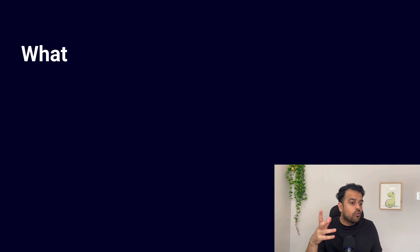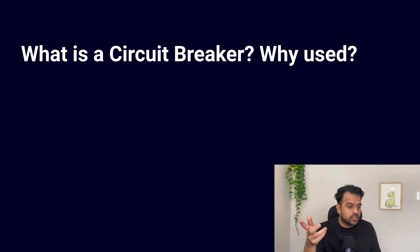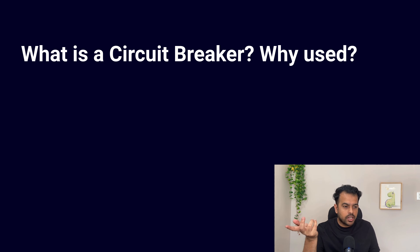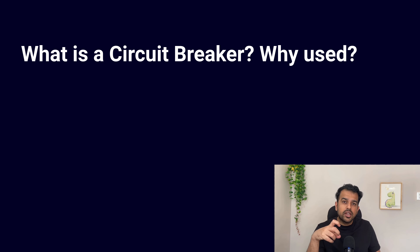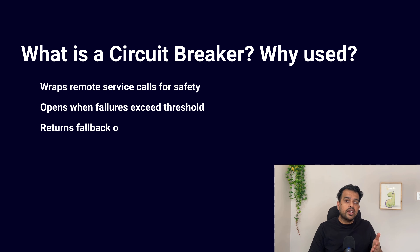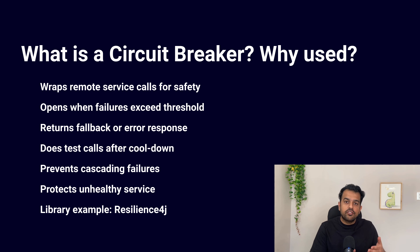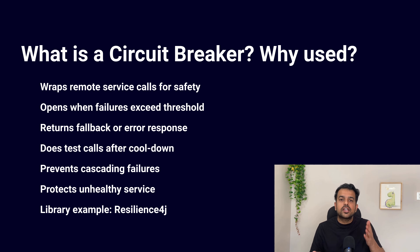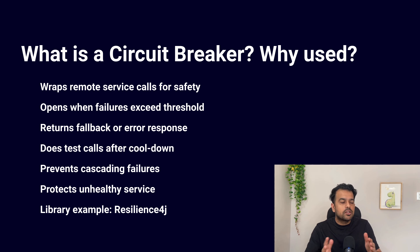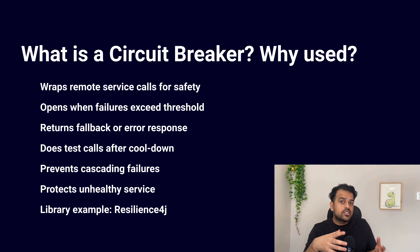The next question is: what is a circuit breaker and why is it implemented in microservice architecture? A circuit breaker is a mechanism that stops calls to a service when it detects too many failures, helping to prevent further strain on the failing service and giving it time to recover. It is implemented in microservice architecture to ensure that one failing service does not cause a complete system failure — cascading failures. This helps maintain overall system stability and improves resilience by managing service dependencies better.